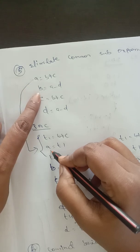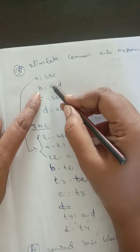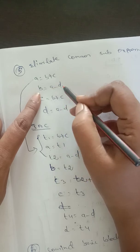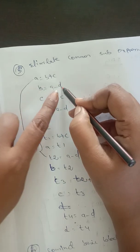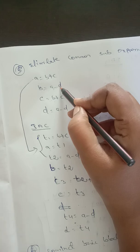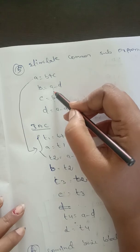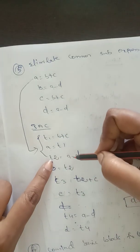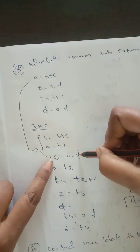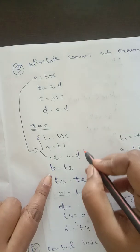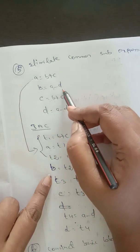The second line is b equal to a minus d. We have to check whether the expression a minus d is already evaluated or not. Looking at the previous statement a equal to b plus c, a minus d is not evaluated. So we write t2 equal to a minus d, and then assign the result of t2 into variable b.